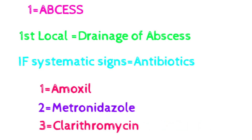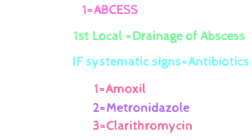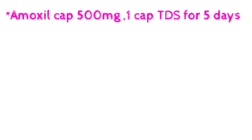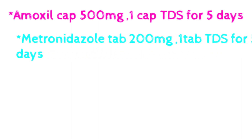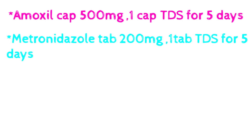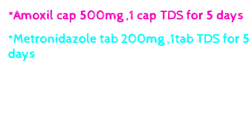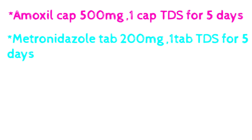When systemic signs are present, we give three types of antibiotics for abscess: number one is amoxicillin, number two is metronidazole, and number three is clarithromycin. For amoxicillin: capsule 500 mg, one capsule at a time, TDS — three times a day — for five days, meaning 15 capsules. For metronidazole: tablet 200 mg, one tablet at a time, same as amoxicillin, TDS for five days — also 15 tablets.